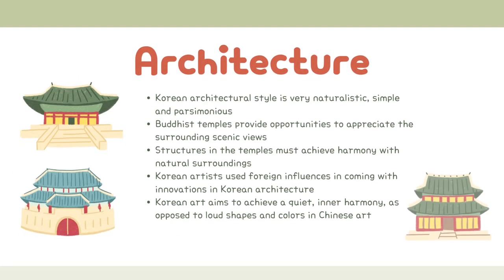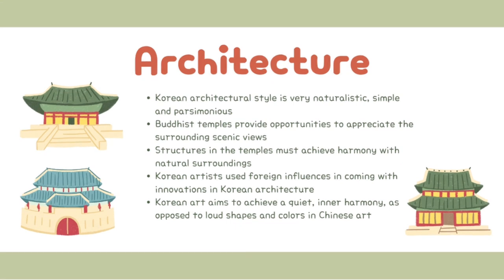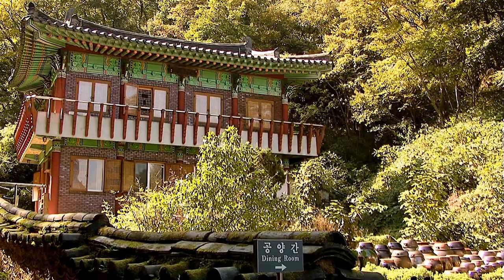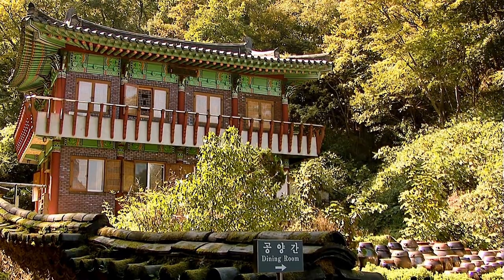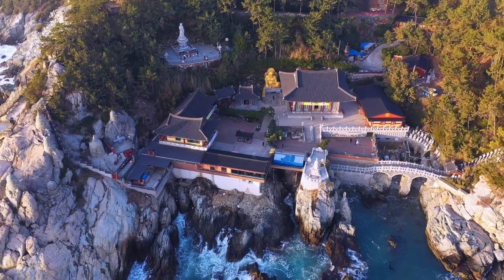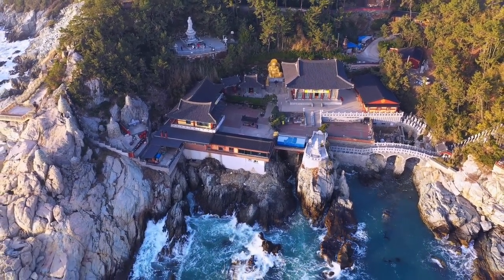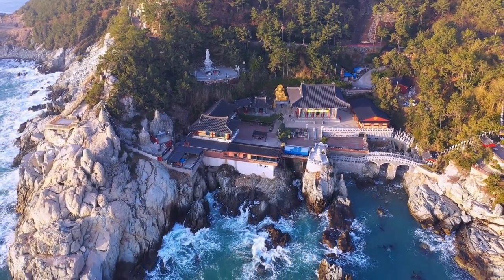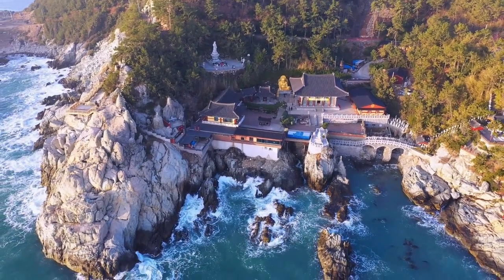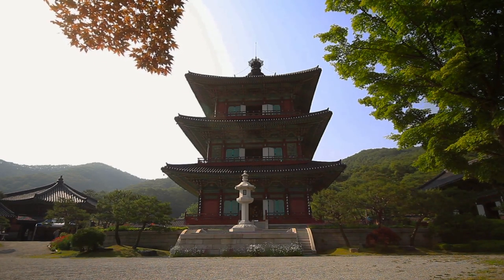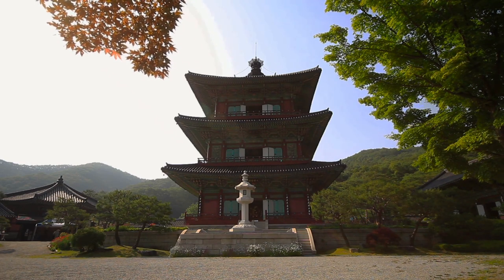Korean architectural style is very naturalistic. It is simple and parsimonious in terms of the use of shapes, and devoid of extreme styling. Buddhist temples in Korea are found in mountainous areas, providing opportunities to appreciate the surrounding scenic views. The structures must achieve a harmony with the natural surroundings. There are traces of foreign influences in Korean architecture; for instance, Chinese roofs are sharply curved, but Korean architects design a more sloping roof. Korean art aims to achieve a quiet, inner harmony as opposed to loud shapes and colors in Chinese arts.